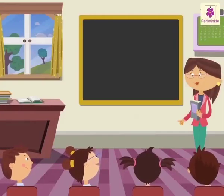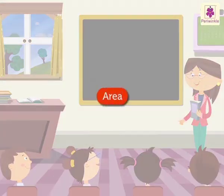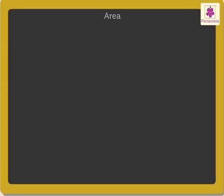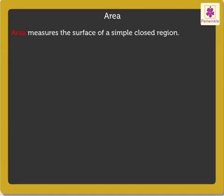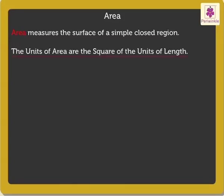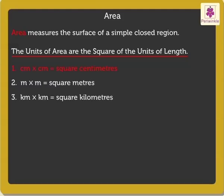Good morning students. Today we shall learn how to find the area of some closed figures. Area measures the surface of a simple closed region. The units of area are the square of the units of length. Thus area can be expressed in square units such as square centimeters, square meters, or square kilometers.